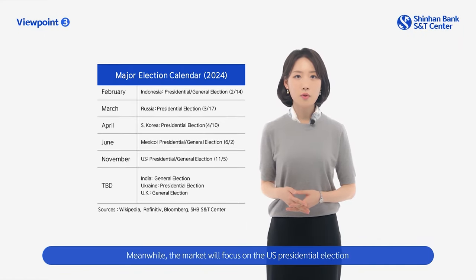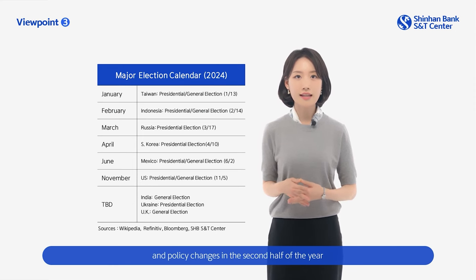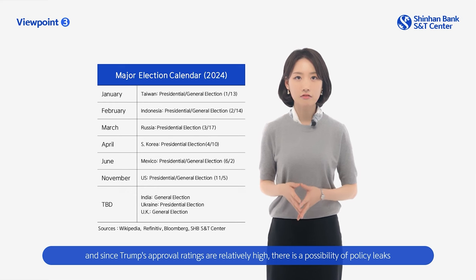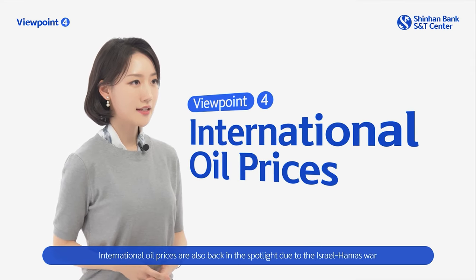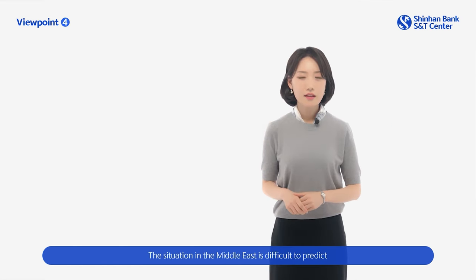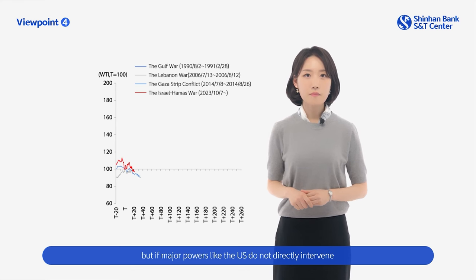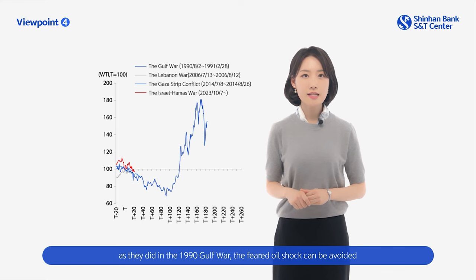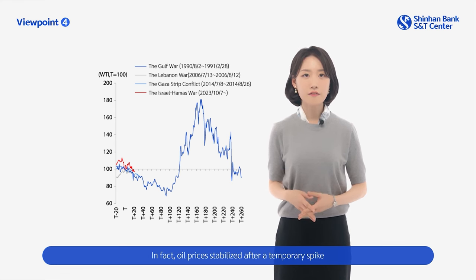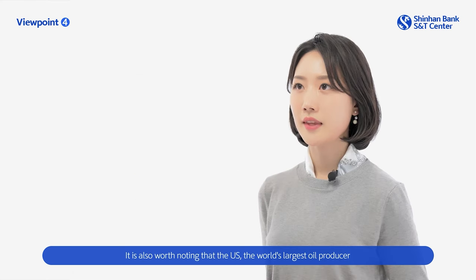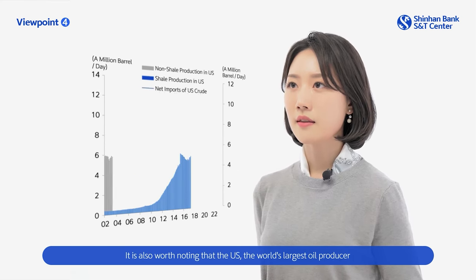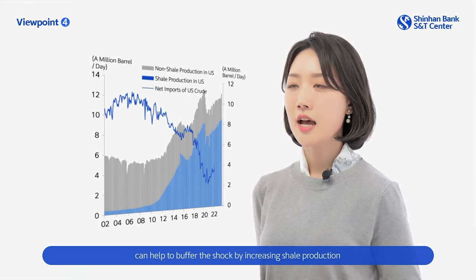The market will focus on the U.S. presidential election and policy changes in the second half of the year. It's difficult to rule out a rematch between Biden and Trump, and since Trump's approval ratings are relatively high, there's a possibility of policy leaks. International oil prices are also back in the spotlight due to the Israel-Hamas war. The situation in the Middle East is difficult to predict, but if major powers like the U.S. do not directly intervene, the feared oil shock can be avoided. Oil prices stabilized after a temporary spike during the Lebanon War or the Gaza Strip conflict, which were both limited to local conflicts. It's also worth noting that the U.S., the world's largest oil producer, can help buffer the shock by increasing shale production.